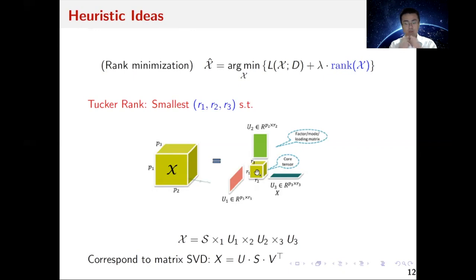Suppose we have a tensor X and it can be decomposed into the product of a core tensor S times three loadings U1, U2, and U3 along these three directions. The minimum dimensions of the core we can achieve to make this equation hold is called the Tucker decomposition, and the corresponding dimensions r1, r2, r3 are the Tucker rank.